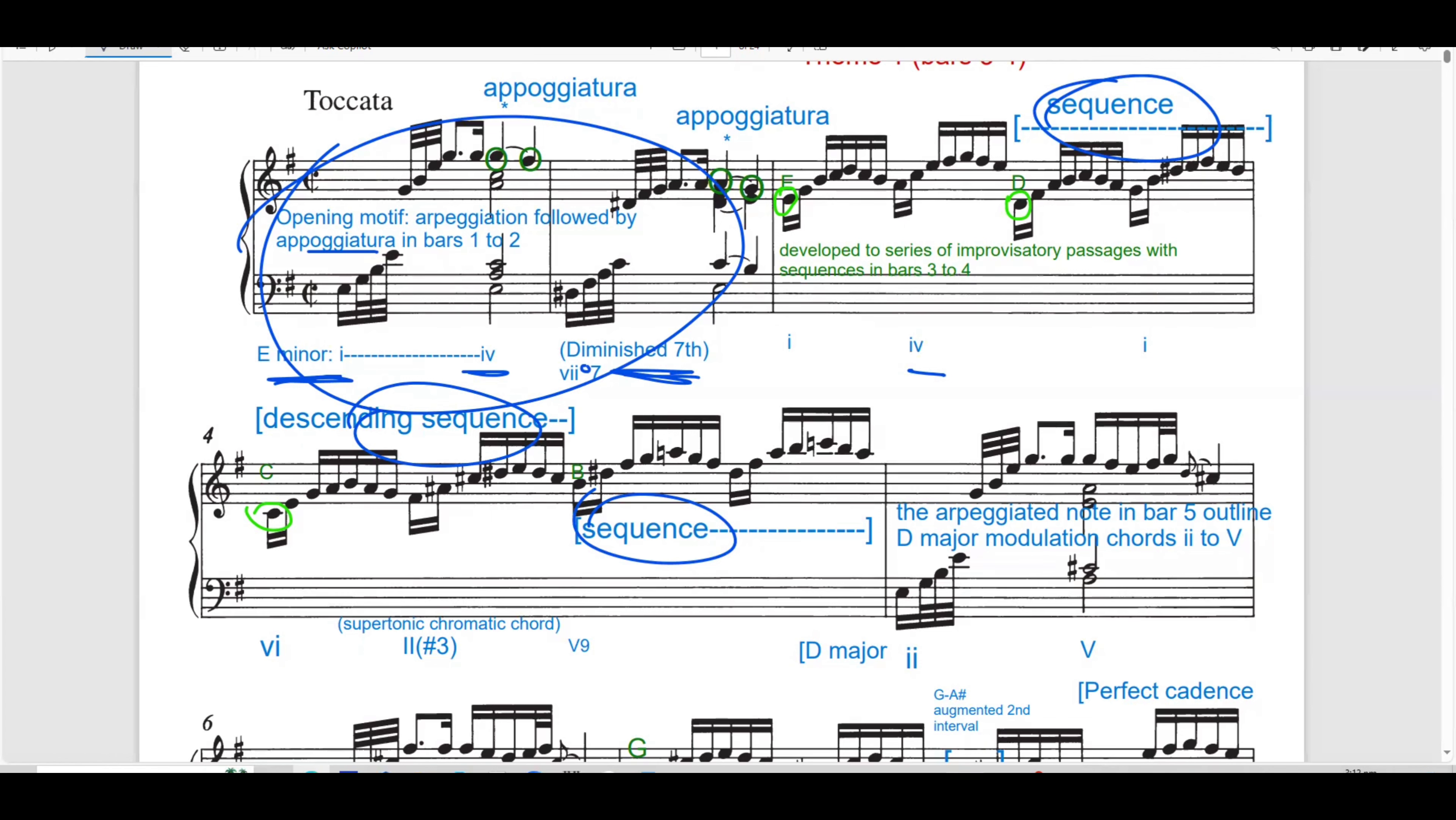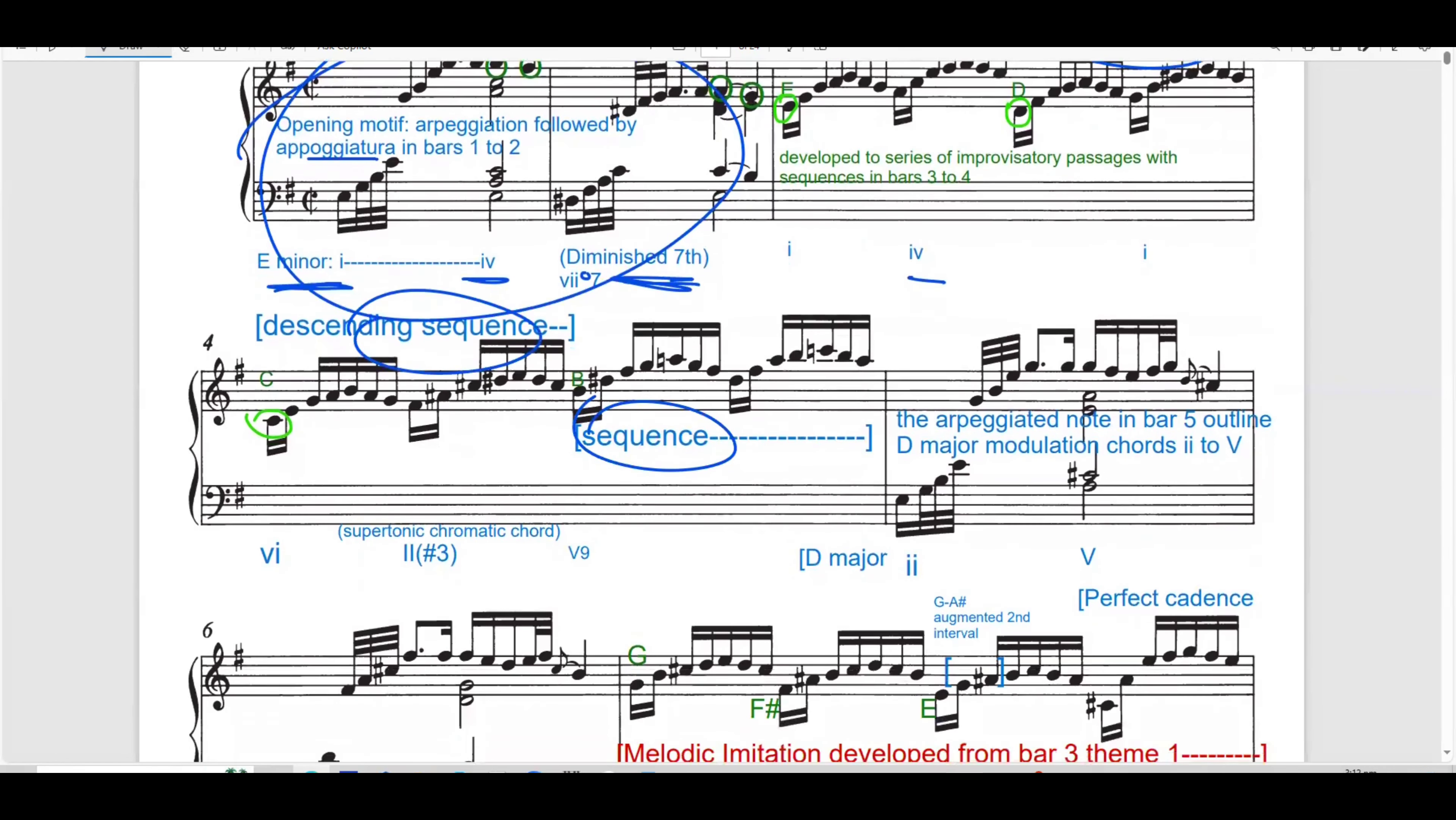In bar 3 to 4, the initial motif is expanded into a series of sequences. These are descending sequences. And it emphasizes the appoggiatura and continues the flow of improvised gestures. The harmonic motion will transition from 1, 4, diminished 7, and there is a supertonic chromatic chord and chord 5, 9.